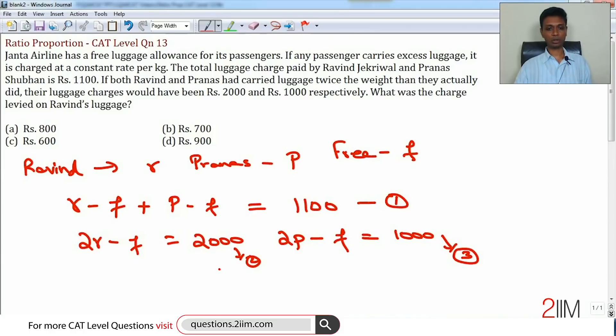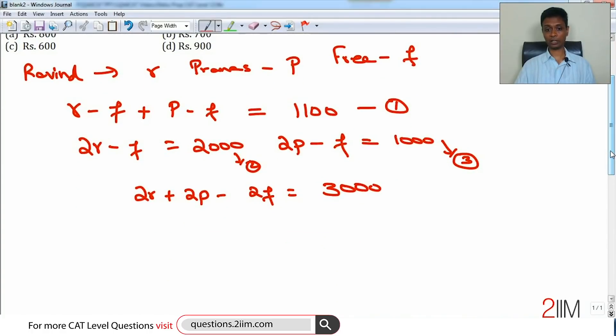Now let us add equations 2 and 3. We will get 2r plus 2p minus 2f equals 3000, or r plus p minus f is 1500.